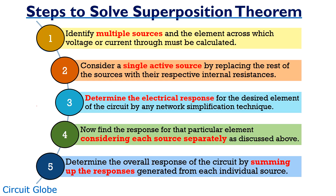Since superposition theorem is applicable for circuits with multiple sources, the first step involves the identification of multiple sources in the network and the element across which voltage or current is to be calculated. Under the presence of multiple sources, the next step involves the selection of a single active source.